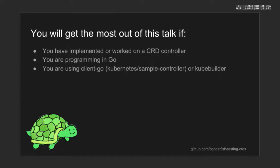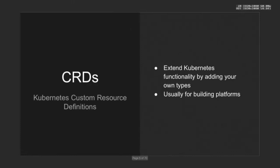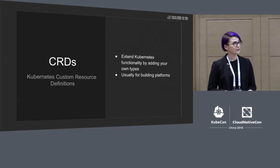You'll get the most out of this talk if you have worked on your own custom controllers before. All of our examples are going to be in Go, and we're going to be looking at two approaches: starting from the Kubernetes sample controller and using Client Go, or using KubeBuilder. But even if you haven't worked with CRDs before, you still might find some of this content interesting, so here's a quick intro to what they are.